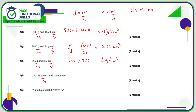Here we've got a density and a volume, so we want the mass. The mass is the density times the volume: 0.00125 multiplied by 100,000 is 125 grams.